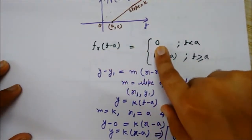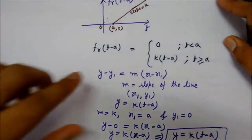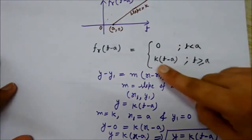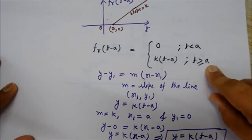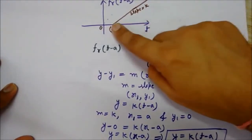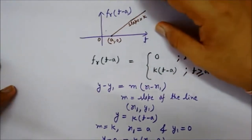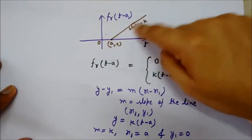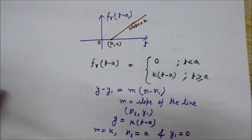We can write it mathematically: fr(t minus a) equals 0 for t less than a, and its value is k(t minus a) for values of t greater than or equal to a. So if t is greater than a, the equation of this line is k(t minus a).